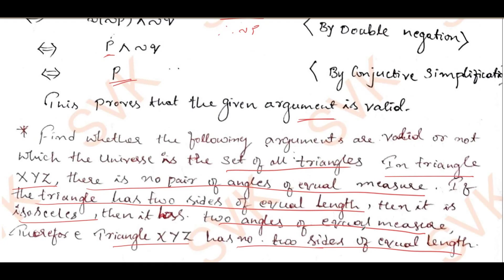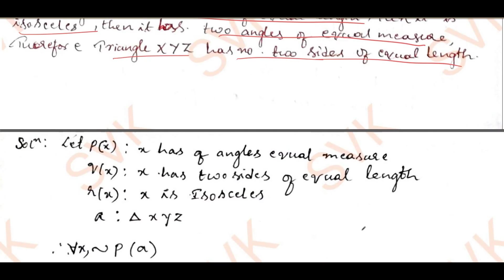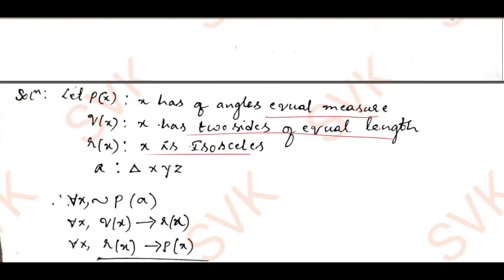Using this argument, we will construct an argument. We define: p(x) as x has two angles of equal measure; q(x) as x has two sides of equal length; r(x) as x is isosceles. We define a as triangle XYZ, which is the common element being discussed. Using quantifiers, the given statement can be written in argument form.